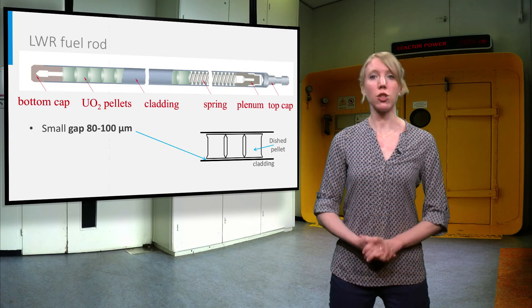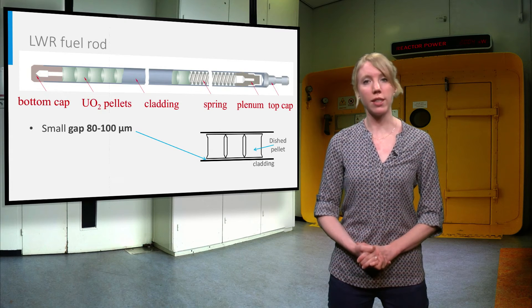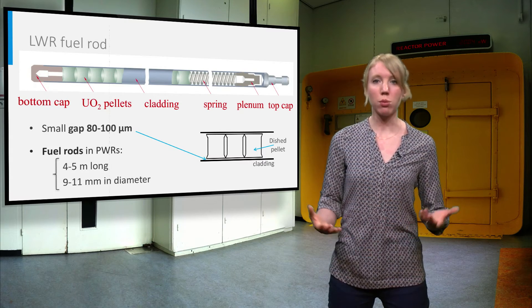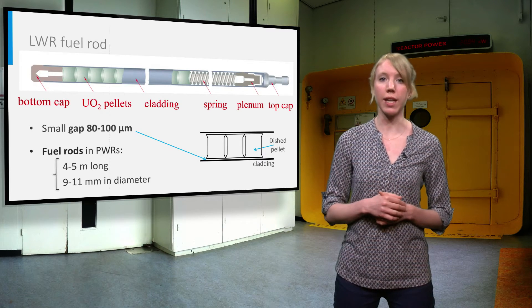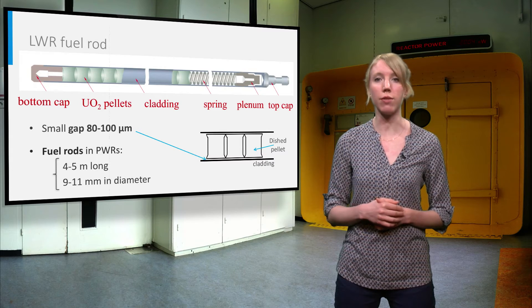The dimensions of the fuel rod depend on the reactor designs. In pressurized water reactors, the fuel rods are about 4-5 meters long and have a diameter of 9-11 millimeters.